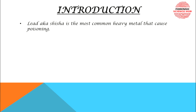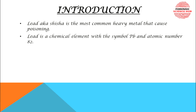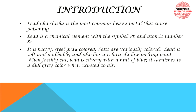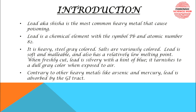Lead is also known as shisha and it is the most common heavy metal that can cause poisoning. Its symbol is Pb and atomic number is 82. It is a heavy, steel-grey coloured metal, but its salts can be variously coloured. Lead is soft and malleable with a relatively low melting point. When freshly cut it has a silvery look with a hint of blue, but tarnishes to dull grey when exposed to oxygen. Contrary to heavy metals like arsenic and mercury, lead is absorbed by the GI tract because it is soluble in gastric juice, and so it becomes poisonous when swallowed.